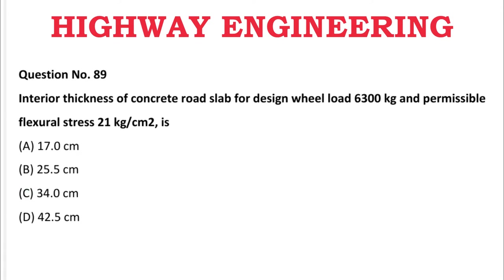Next question: The interior thickness of a concrete road slab for a designed wheel load of 6300 kg and permissible structural strength of 21 kg per cm² is — A: 17 cm, B: 25.25 cm, C: 34.0 cm, D: 42.5 cm. The correct answer is B, 25.5 cm.